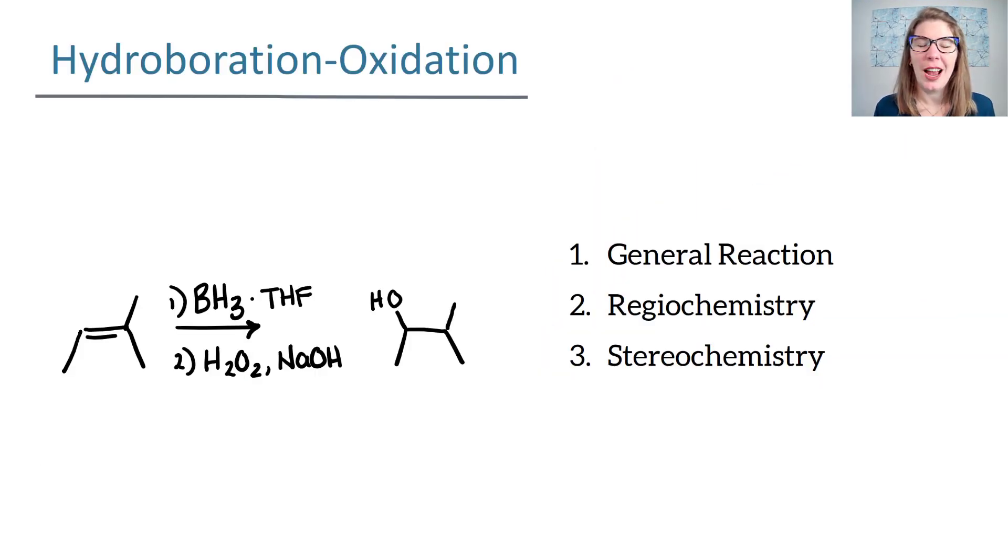In the general hydroboration oxidation reaction you are again going to be adding OH and H across the pi bond. What you're going to find is that the first step is BH3 with this little dot right here and then THF.